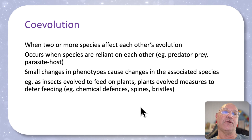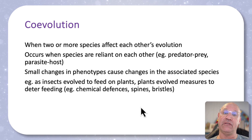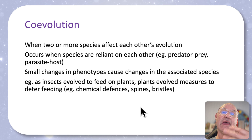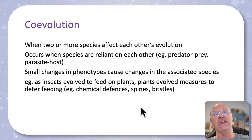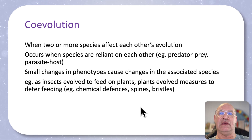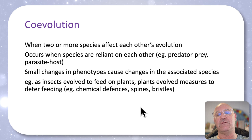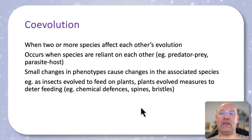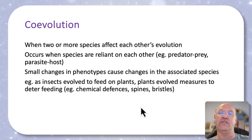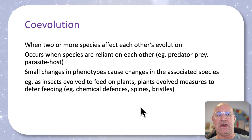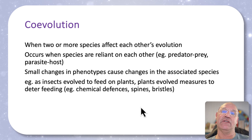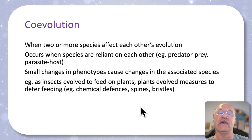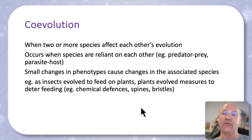The final pattern is co-evolution, where two or more species evolve such that the evolution of each species affects the other. A classic example is insects that feed on plants, so that the plants then evolve mechanisms to deter feeding — for example, spines, bristles, chemical defences, and things like that.